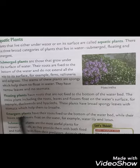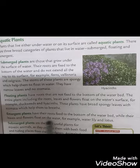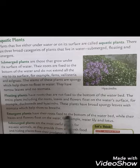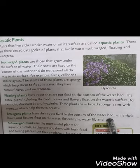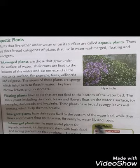Emerging plants have roots fixed to the bottom of the water bed, while their leaves and flowers float on the water. Examples are water lily and lotus. So the root is fixed below the water, and the leaves and flowers float on the surface.